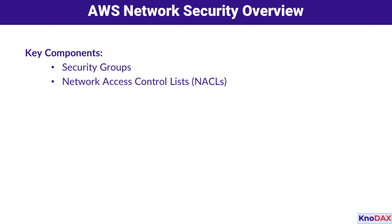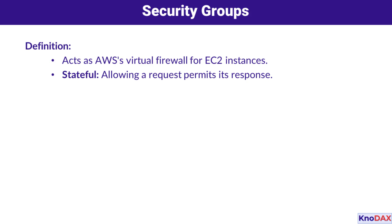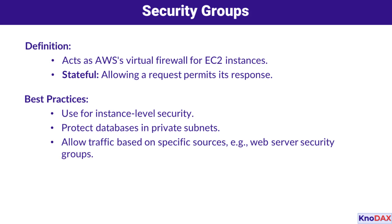Let's get started. First up, let's talk about security groups. Think of them as virtual firewalls for your EC2 instances. One important thing to remember is that security groups are stateful. What does that mean? Well, if you allow an inbound request, the response is automatically allowed without needing an explicit rule.